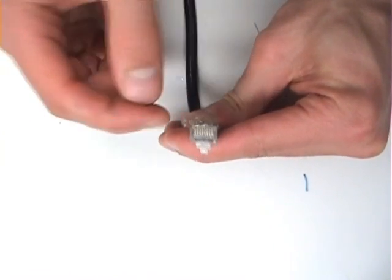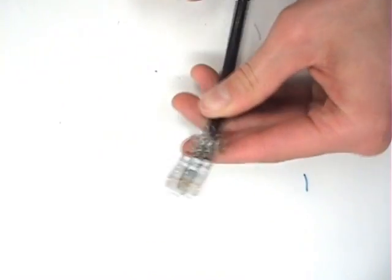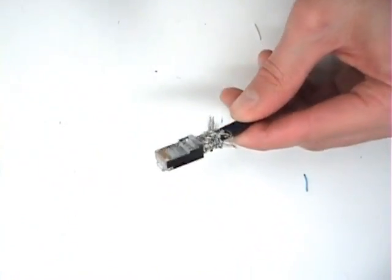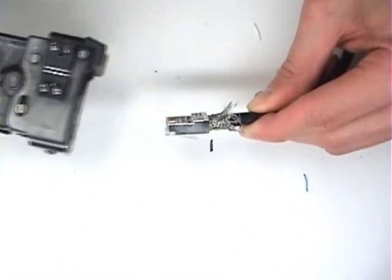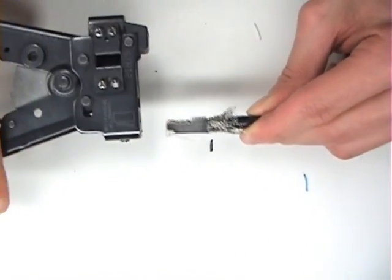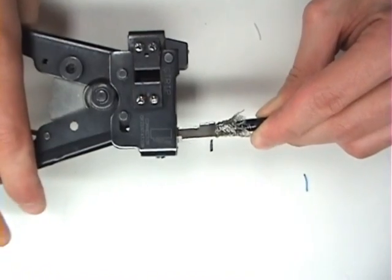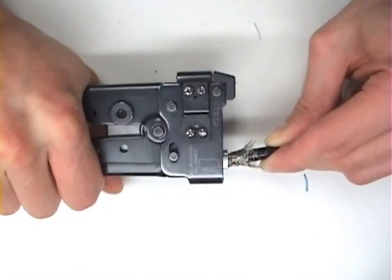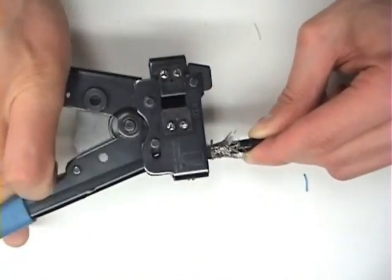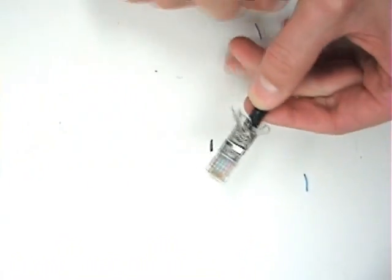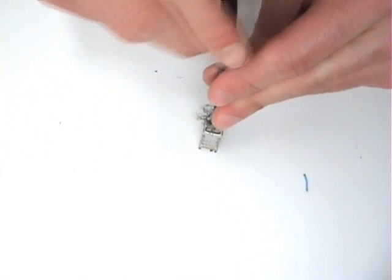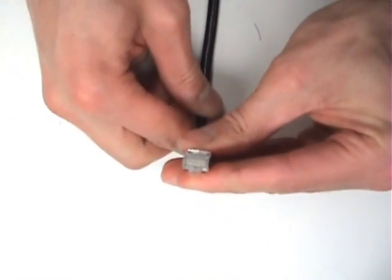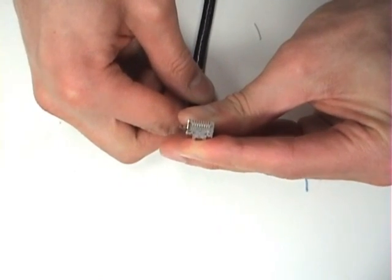Double check you can see your copper tips. And make your crimp. After crimping, ensure that all the teeth have been crimped down. And ensure that you can see all your copper tips.